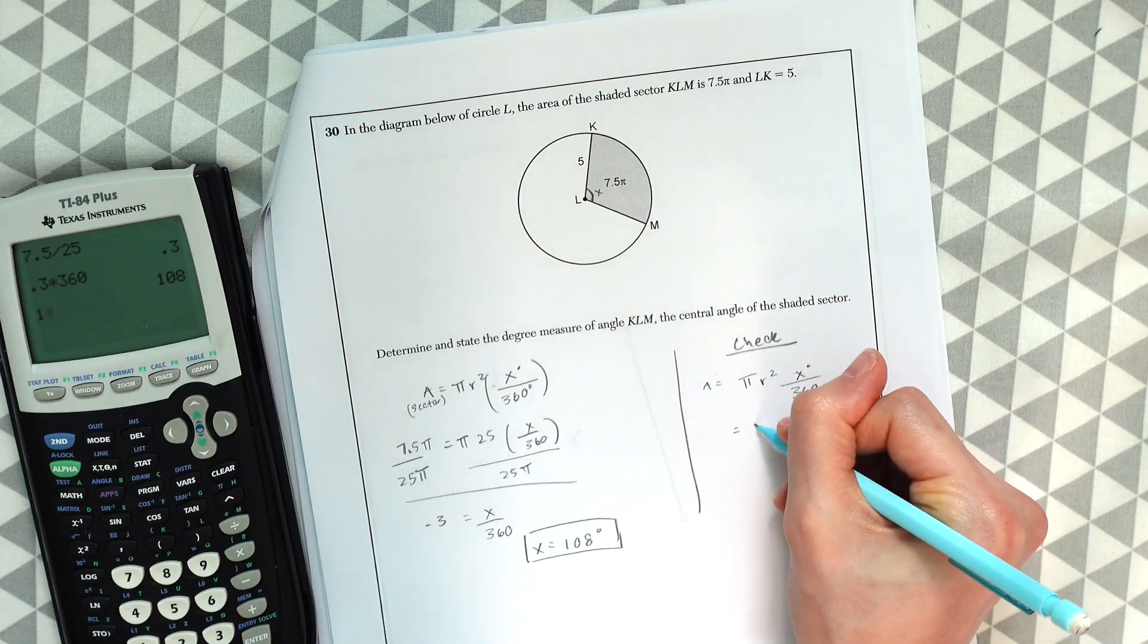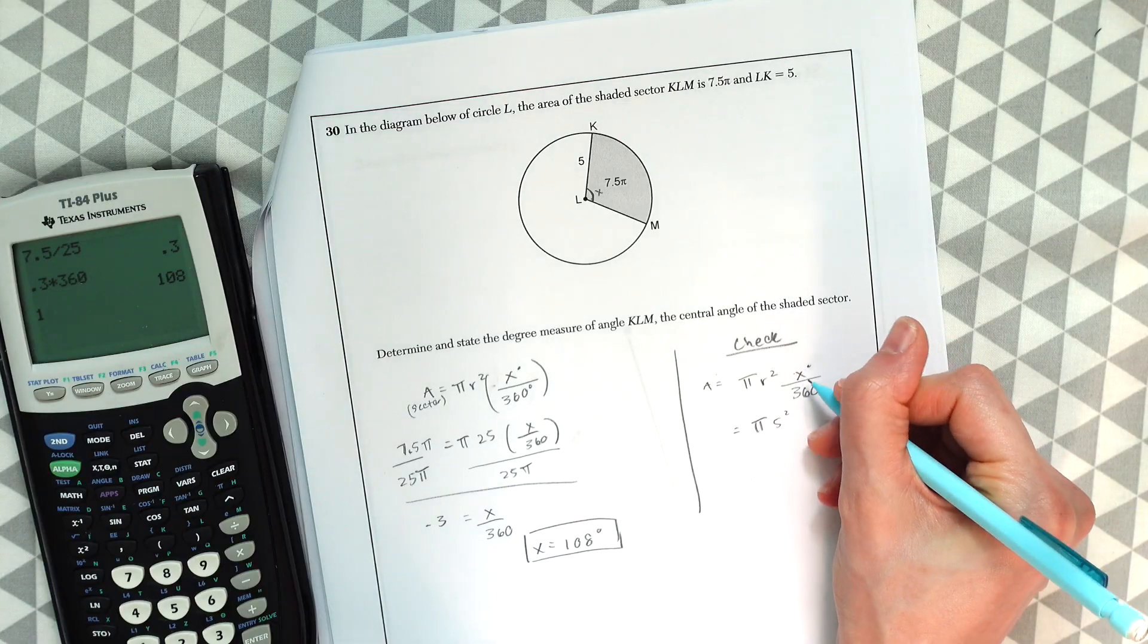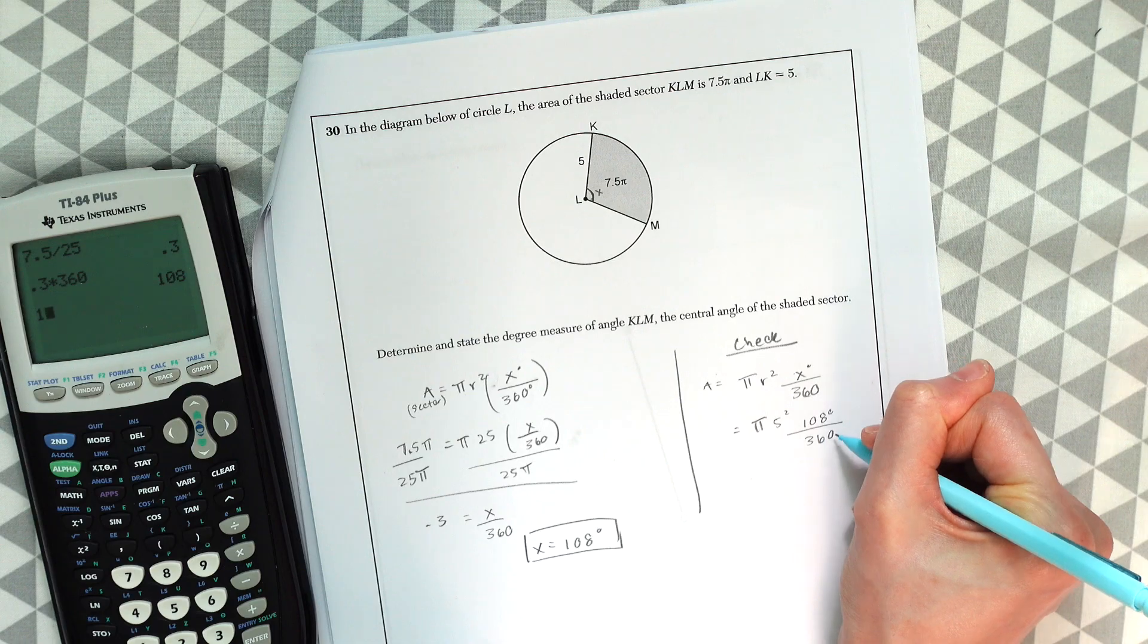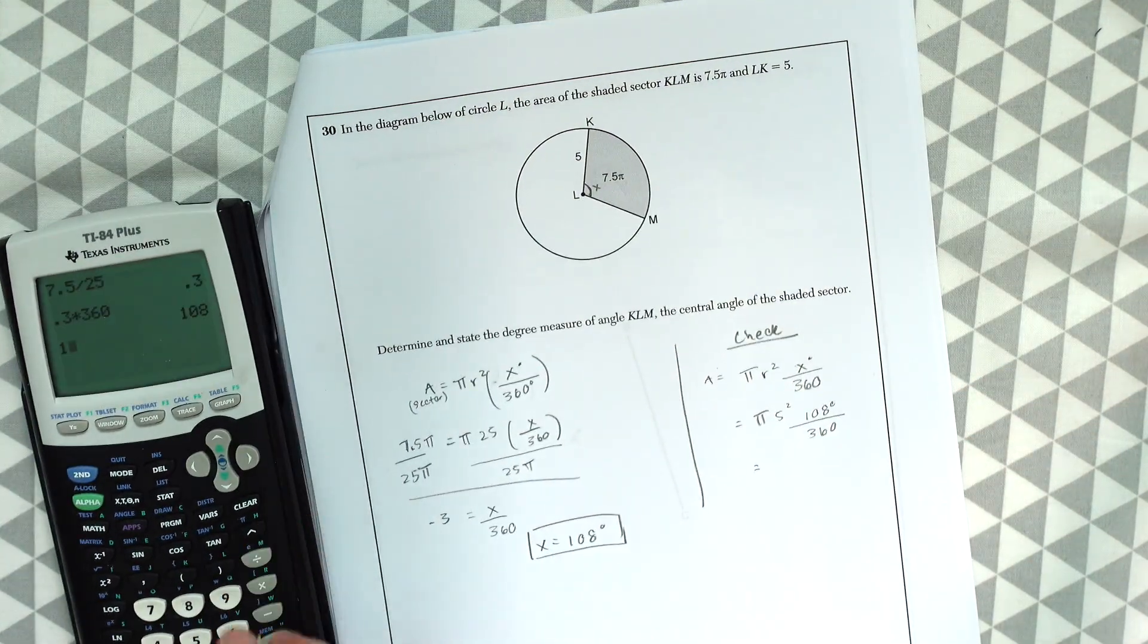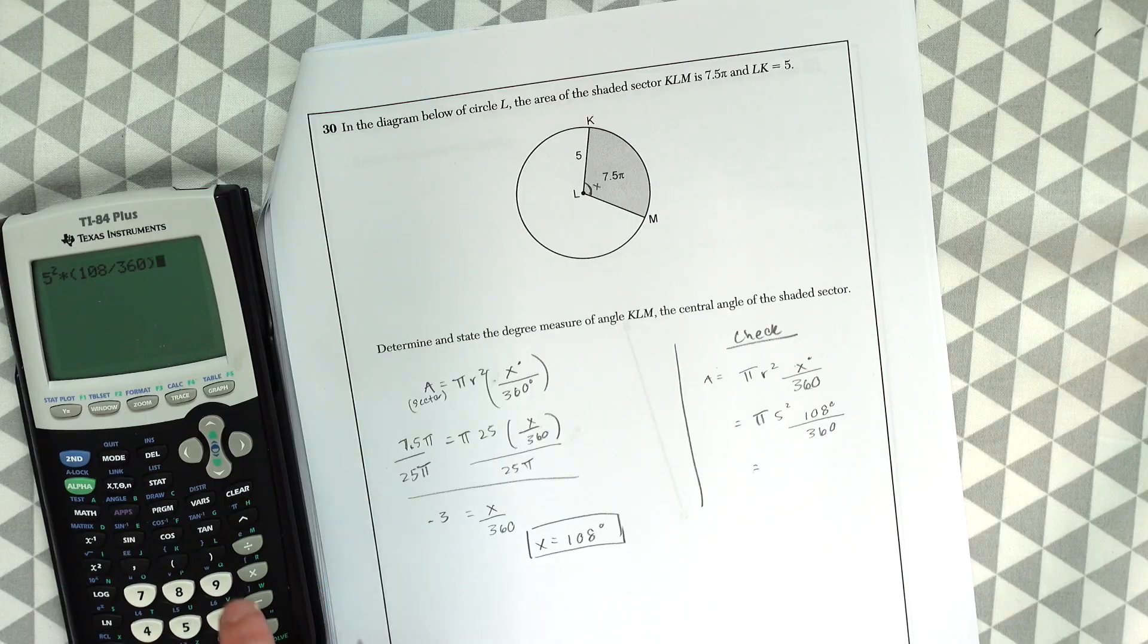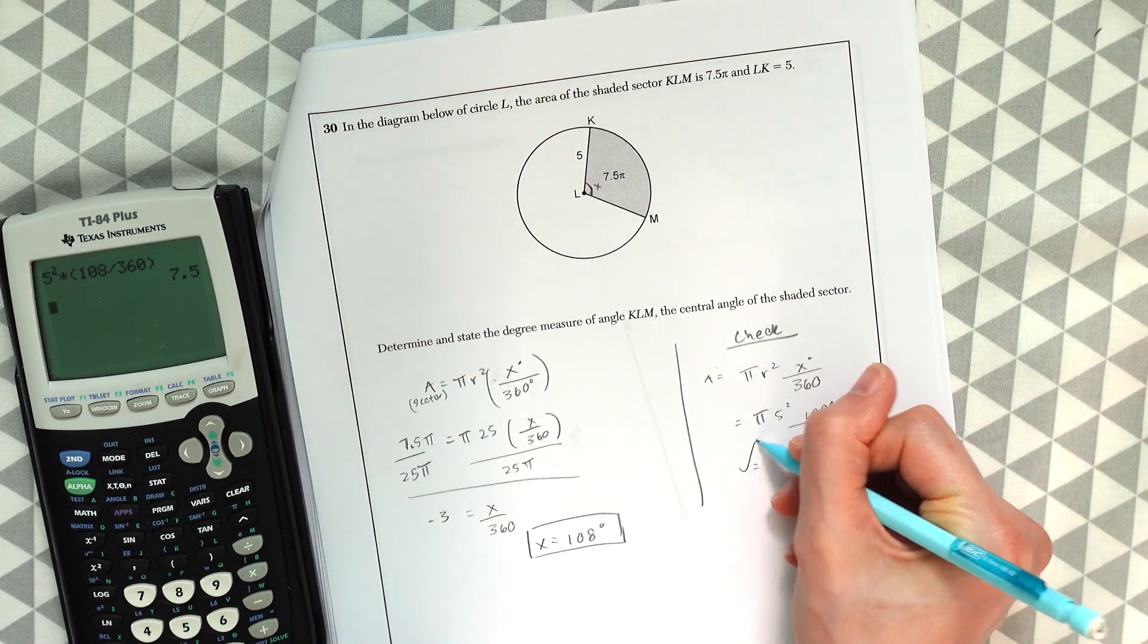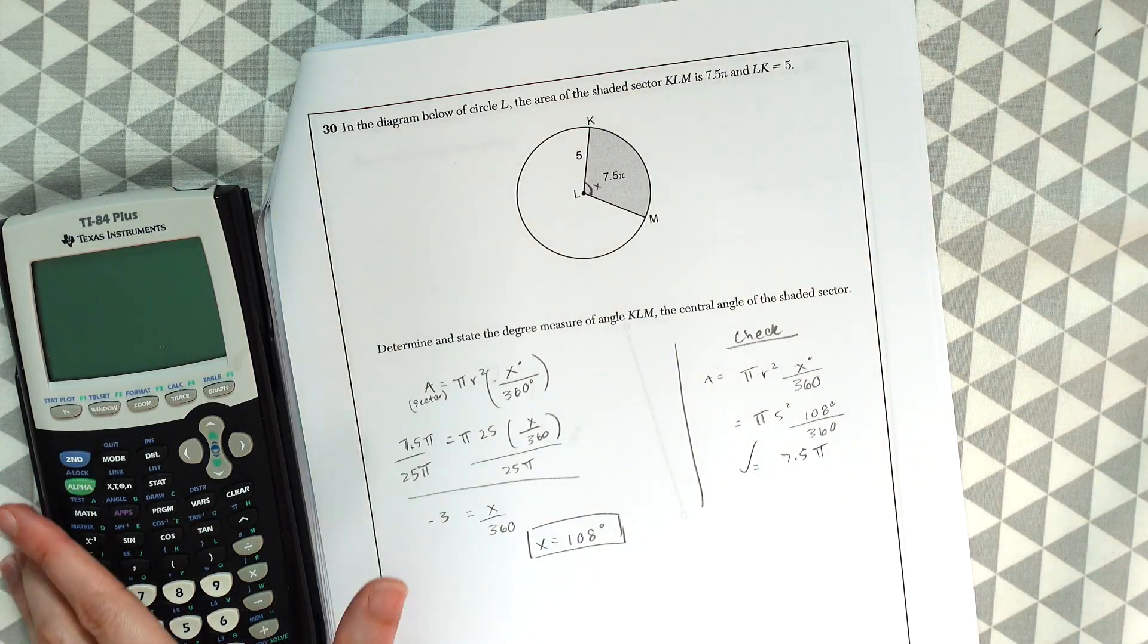So we just did pi times 5 squared. And then now we know the value of this x, 108 degrees over 360. And if you plug this all in, you're going to get 7.5. So if we do 5 squared, you'll get 7.5 pi. So we know our answer is correct. And that's it. That's all there is to it for this one.